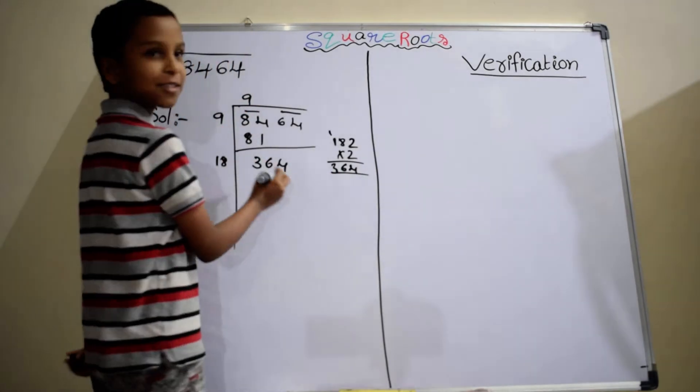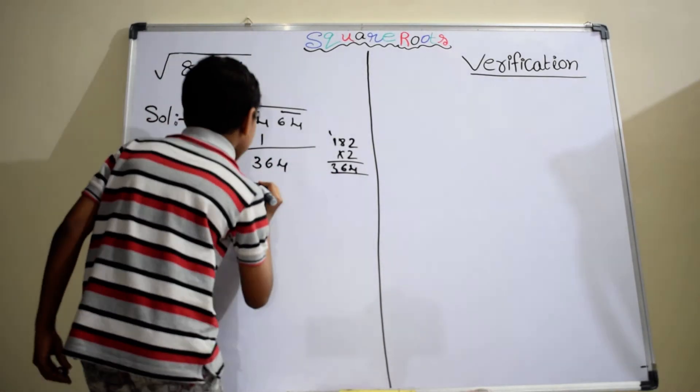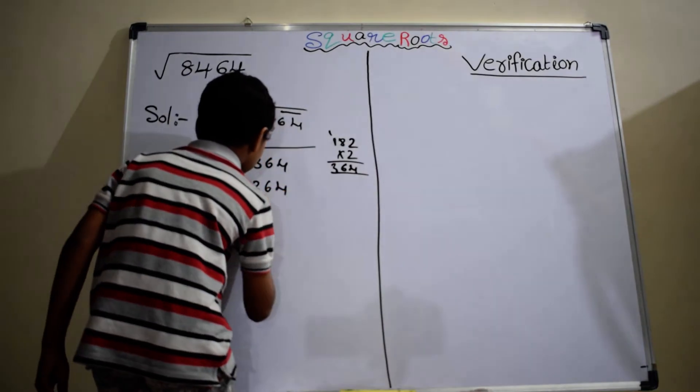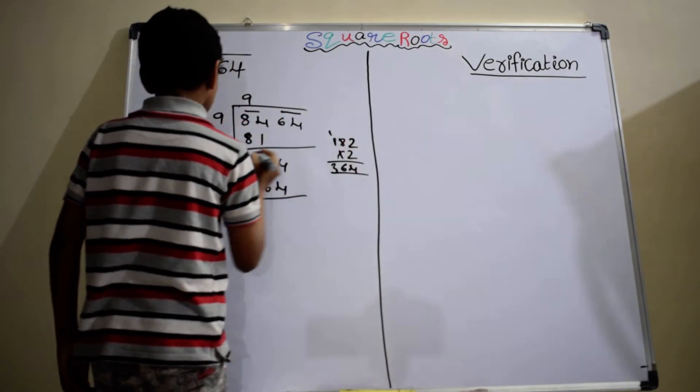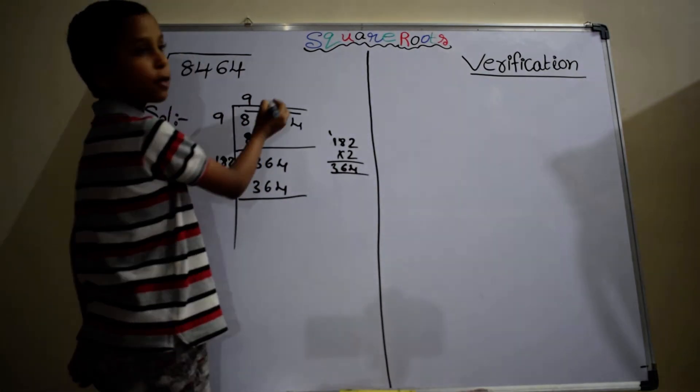Oh! We got 364. In this step, we have to write 2 here and as well as here.